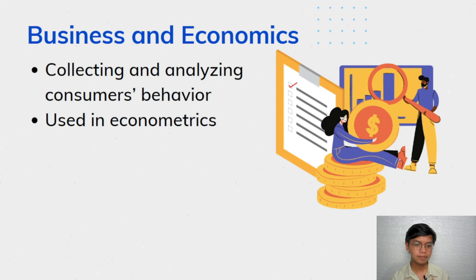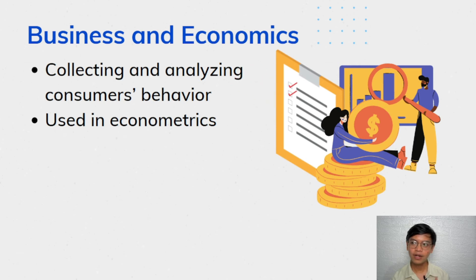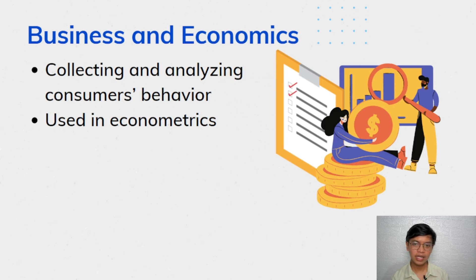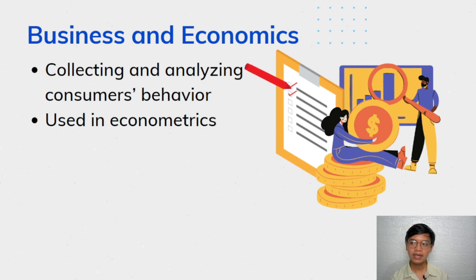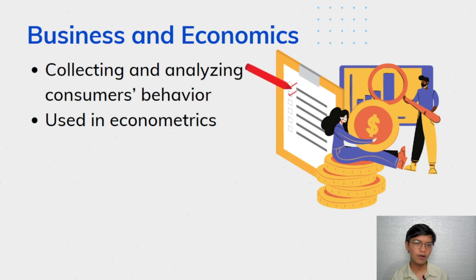Aside from that, quantitative methods are used in economics. In economics, we have our GDP and GNI — the gross domestic product and gross national income. These are indicative of how our economy performs, and one way of determining the GDP and GNI is the use of quantitative methods, looking at the value of our demand and supply.